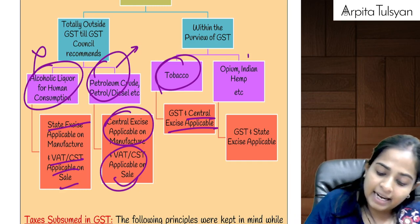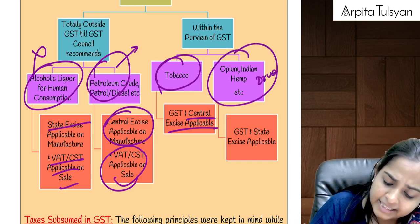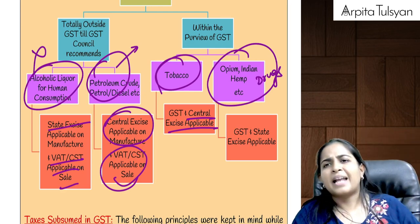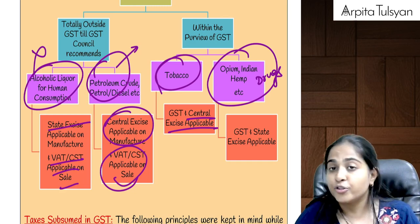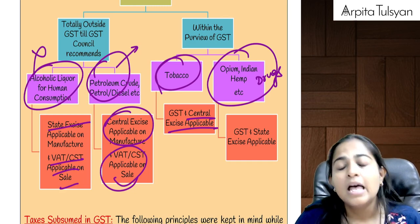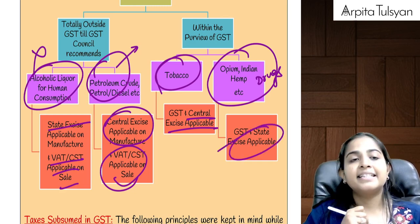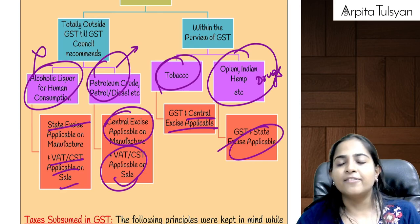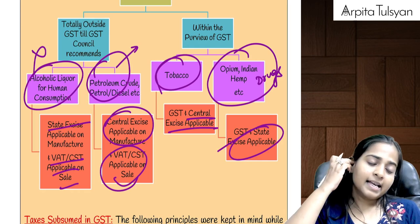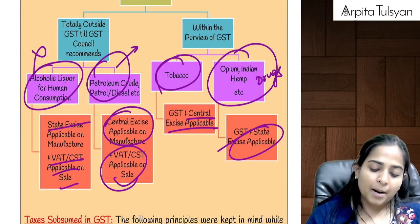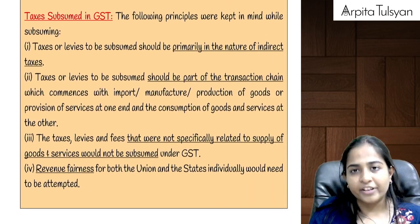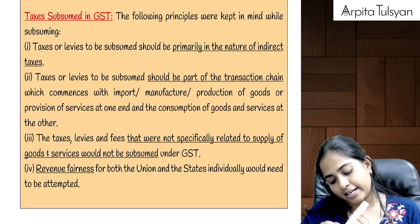And last, drugs — that is OPM, Indian hemp, narcotic drugs, etc. On those also, GST is applicable at the time of sale, but at the time of manufacture, state excise duty will be applicable. This is about the applicability of GST on various transactions.